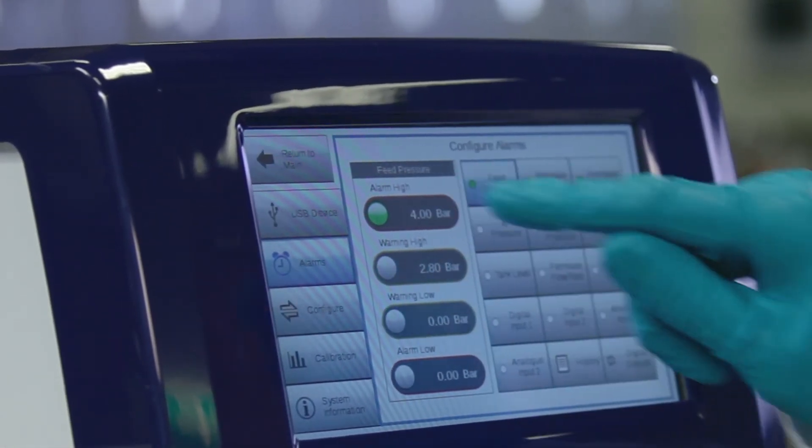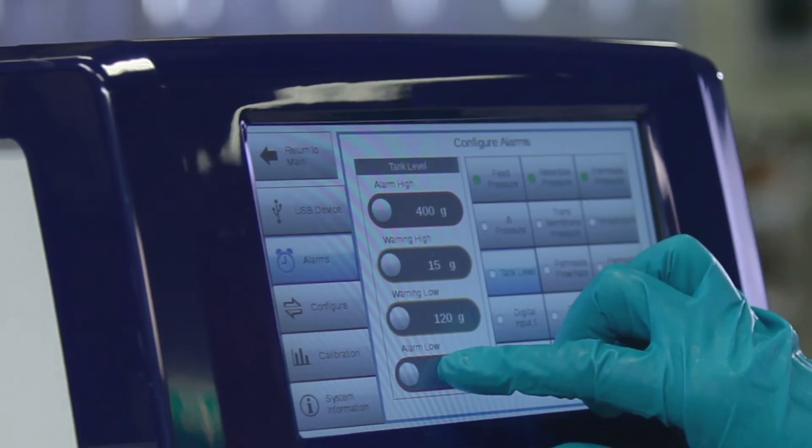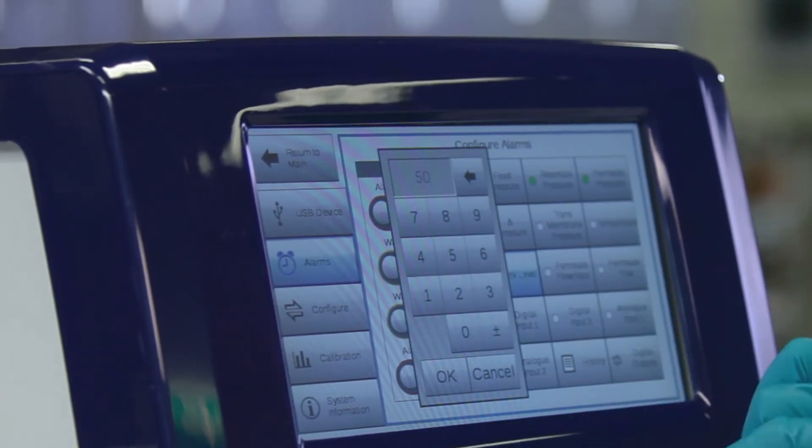Press Settings and set endpoint alarm from low tank level to final volume. The level alarm will alert you when endpoint is reached.